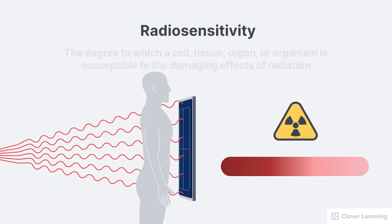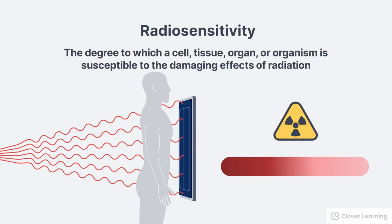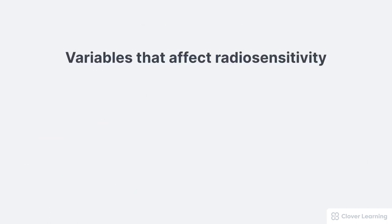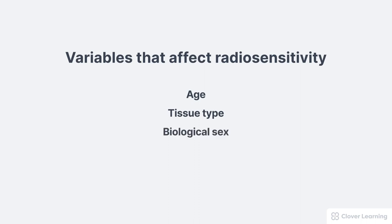To summarize, radiosensitivity describes the degree to which a cell, tissue, organ, or organism is susceptible to the damaging effects of radiation. There are five general factors that affect radiosensitivity: the person's age — young children are more sensitive than adults; the tissue type being exposed — the lungs, breast, gonads, and bone marrow are the most sensitive tissues; the person's biological sex — females are about 35% more sensitive than males; the radiation type — alpha particles are more damaging than x-rays; and the rate of exposure — a high exposure rate is more damaging than a low exposure rate.